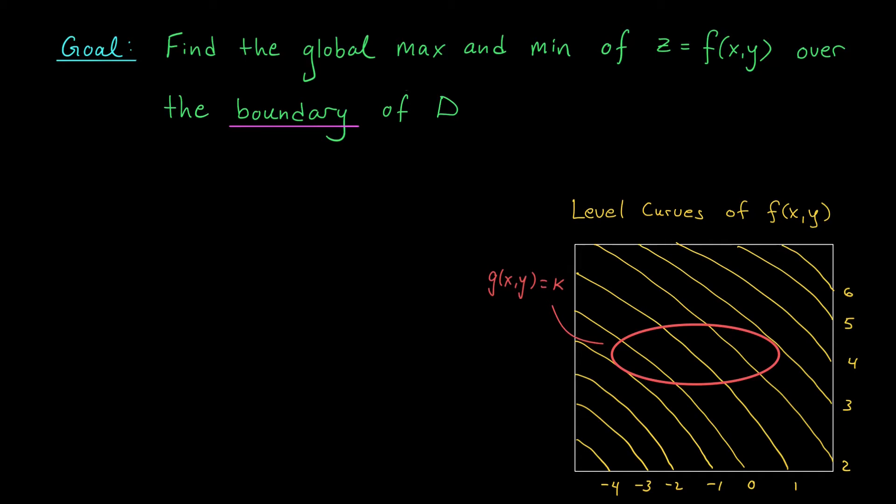If we ask for any larger value of our function, then we're talking about a level curve that's a little farther away. There are no points on that level curve that lie on the constraint curve. So this point here is actually our global max subject to the constraint.